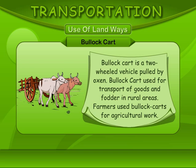Bullock cart. A bullock cart is a two-wheeled vehicle pulled by oxen. It is used for transport of goods and fodder in rural areas. Farmers use bullock carts for agricultural work.